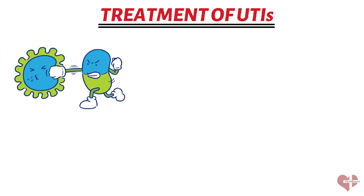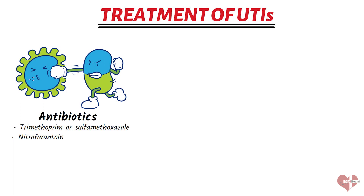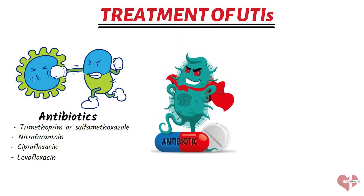Once a UTI has been diagnosed, your doctor will work with you to develop an appropriate treatment plan. Antibiotics are the most common treatment for UTIs, as they work to kill the bacteria causing the infection. The type of antibiotic prescribed depends on the severity and location of the infection. Commonly prescribed antibiotics include trimethoprim-sulfamethoxazole, nitrofurantoin, ciprofloxacin, and levofloxacin. It's important to take antibiotics as prescribed, even if your symptoms improve before the medication is finished, as failure to complete the full course can contribute to antibiotic-resistant bacteria.